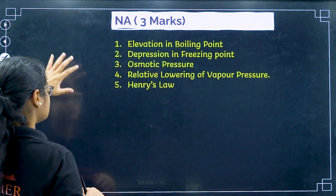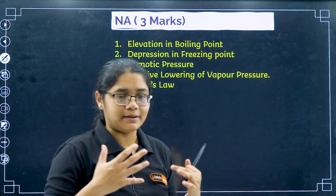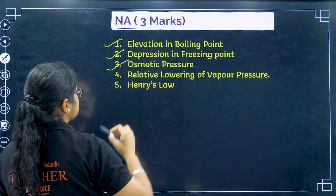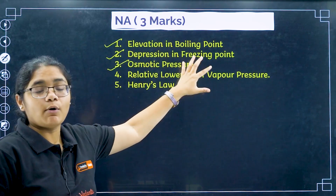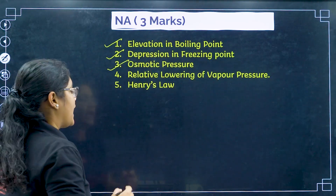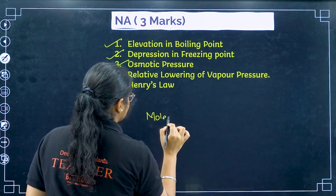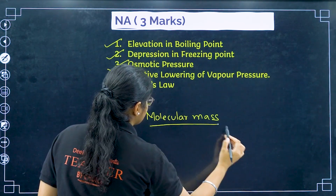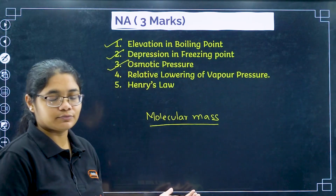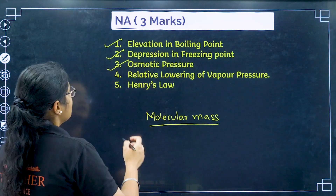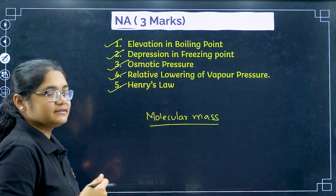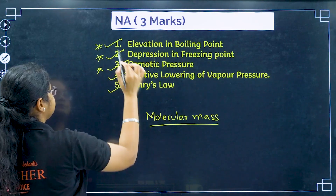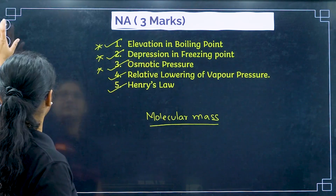For numerical questions, you will definitely get elevation in boiling point, depression in freezing point, and osmotic pressure. These are the three most important numerical types, and you will most probably be asked to calculate the molecular mass — looking at the last five years of papers, they always ask that. Direct formula-based questions are expected. You may also get relative lowering of vapor pressure and Henry's Law numerical questions.